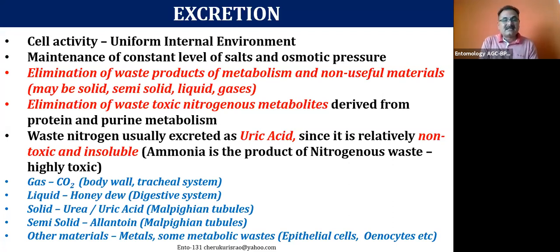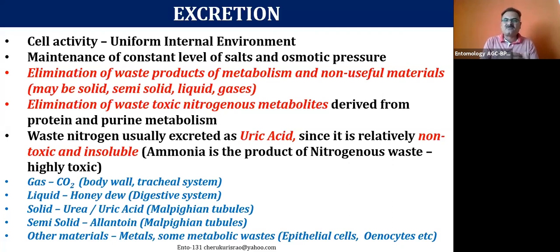The nitrogen metabolites coming from protein metabolism are produced in very large quantities. Nitrogen will immediately convert into ammonia, and in insects, ammonia is very toxic. To eliminate ammonia, which requires a lot of water, insects would need huge quantities of water. That is the reason insects have a wonderful system — the conversion of all nitrogen wastes into uric acid, which is less toxic, requires very little water and is insoluble.